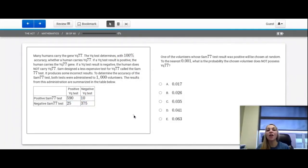Question number 38. And our last question that uses this prompt. One of the volunteers whose SAM77 test result was positive will be chosen at random to the nearest point 001. What is the probability the chosen volunteer does not possess YQ77? So in this case, we're doing a probability problem. So we want the number of favorable outcomes over the total. In this case, our total is the positive results.